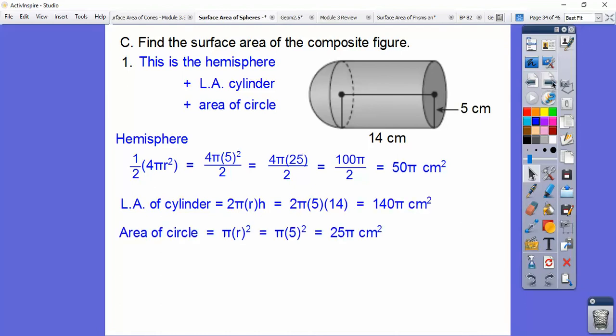So 2πr is circumference times the height. So we plug that in, and we get 140π, and then the area of a circle is πr², so 25π. So the total surface area is the sum of those, so 215π centimeters squared, which is about 675.4 centimeters squared.